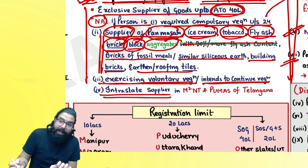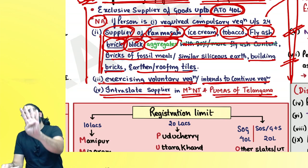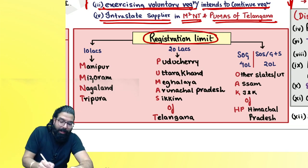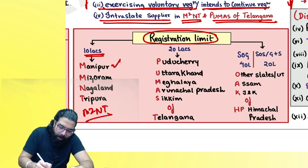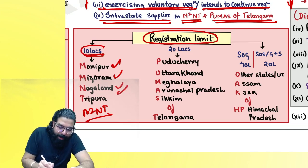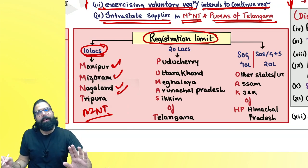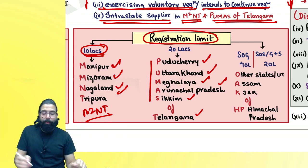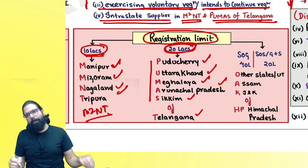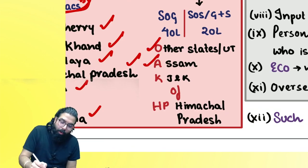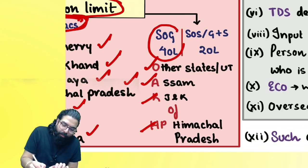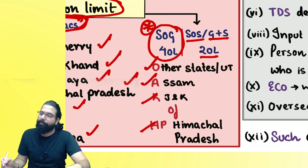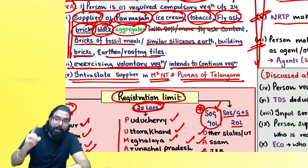To remember the registration limits: if you are in M² and T (Manipur, Mizoram, Nagaland, Tripura), the limit for supplier of goods, services, or goods plus services is ₹10 lakh. If you are in PUMAS states — Puducherry, Uttarakhand, Meghalaya, Arunachal Pradesh, Sikkim, and Telangana — the limit is ₹20 lakh for all categories. In other states like Assam, Oak (J&K), Himachal Pradesh, the limit for exclusive supplier of goods is ₹40 lakh; supplier of services or goods plus services is ₹20 lakh.